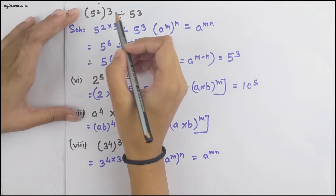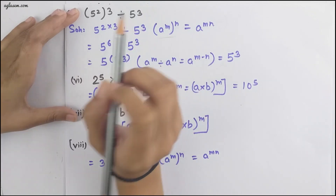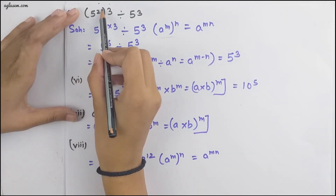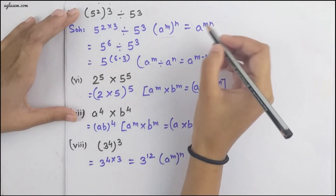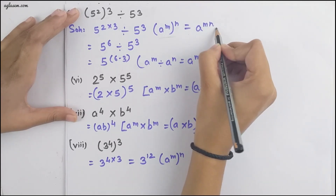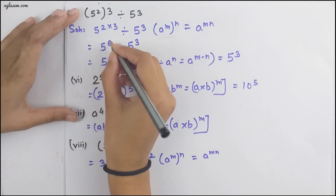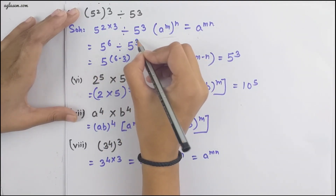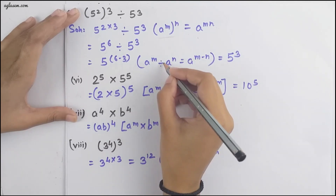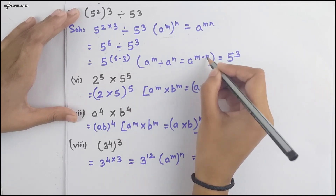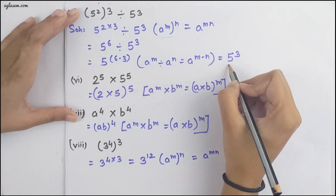Moving to the next part, we have 5 raised to the power 2, whole power 3, divided by 5 raised to the power 3. The formula is (a^m)^n = a^(m×n), so 5 raised to the power 2, whole power 3, gives 5^(2×3) = 5 raised to the power 6, divided by 5 raised to the power 3. Then using a^m ÷ a^n = a^(m−n), we get 5^(6−3) = 5 raised to the power 3.